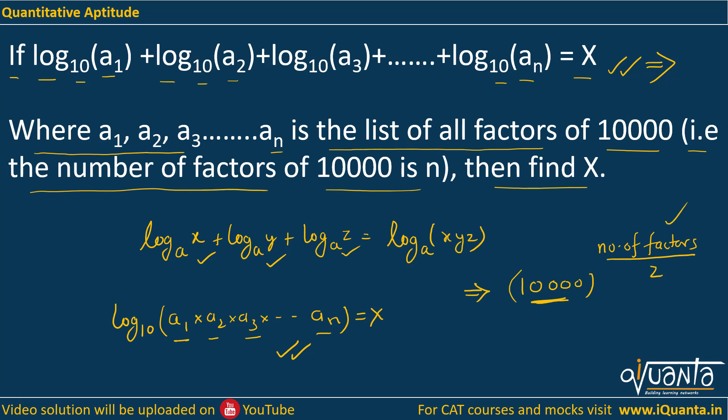10,000 = 10⁴ = 2⁴ × 5⁴. So the number of factors will be (4+1) × (4+1) = 5 × 5 = 25.